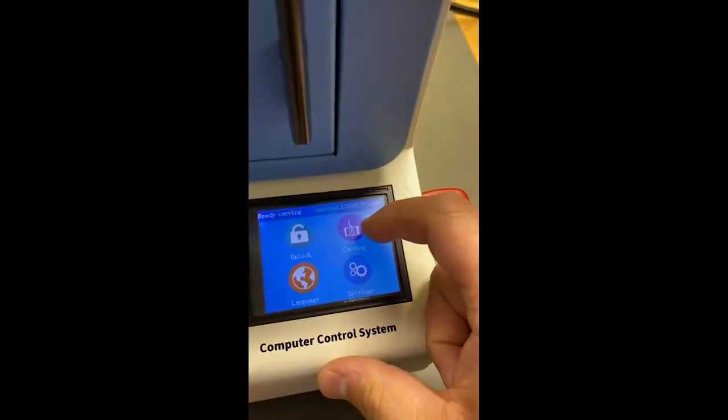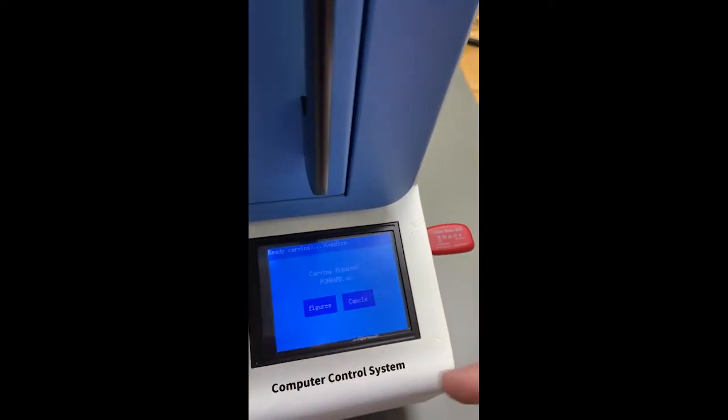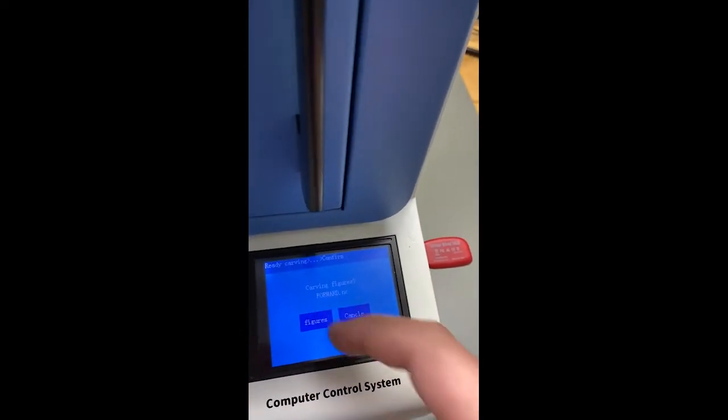I'm going to hit carving, go to the file, which is Forward dot init figures. And it's going to run through the process.